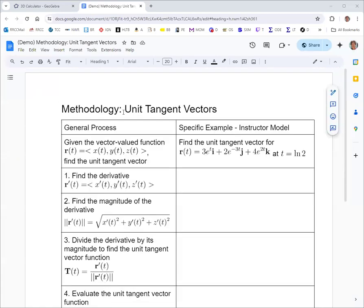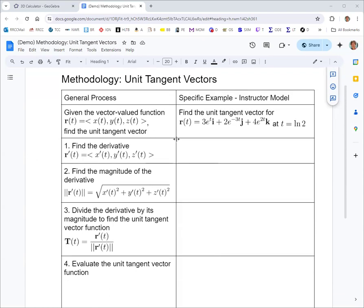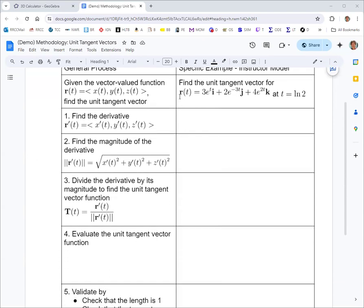In this video, we're going to take a look at finding unit tangent vectors for a vector-valued function. The vector-valued function we've got is r(t) = 3e^t i + 2e^(-3t) j + 4e^(2t) k. And we're interested in when t is natural log of 2. Sometimes you have a specific t-value, sometimes you don't. We'll take a look at it in general and at that specific value.